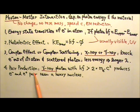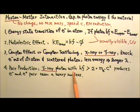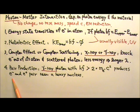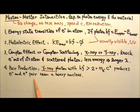Four: pair production. When a gamma ray photon with energy more than twice the mc squared of an electron enters matter and gets close to a heavy nucleus, it may disappear as a photon and reappear as an electron and a positron pair. This has to happen next to a heavy nucleus in order to keep momentum conserved.